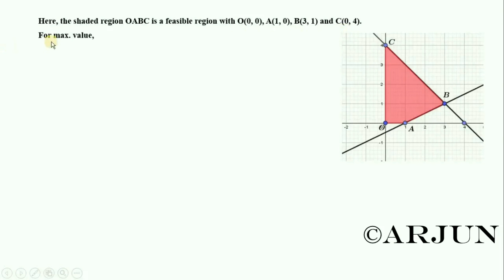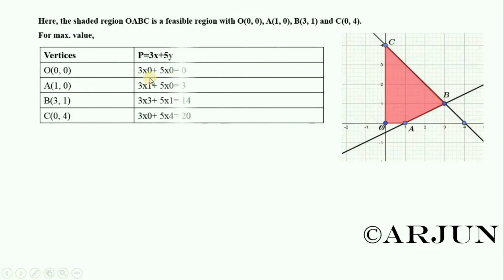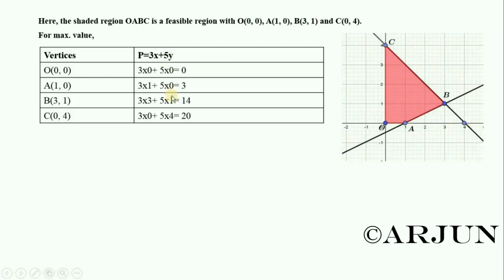Here is the graph for the maximum value. For the objective function P equals 3x plus 5y, we evaluate at each vertex. At O (0, 0): P equals 0. At A (1, 0): P equals 3 times 1 plus 5 times 0 equals 3. At B (3, 1): P equals 3 times 3 plus 5 times 1 equals 14. At C (0, 4): we compute P as well.